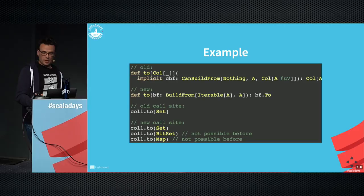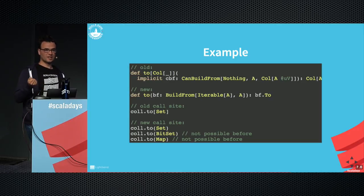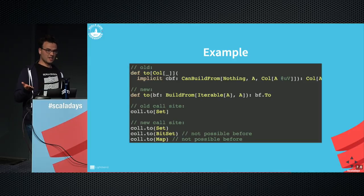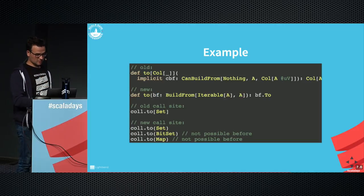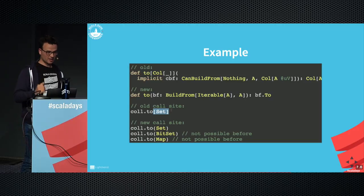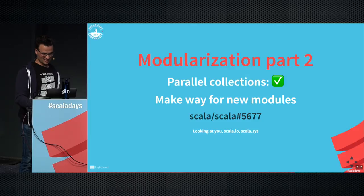Here's an example of the much-maligned CanBuildFrom — actually part of my thesis, so I won't take it personally. What you get now is a lot cleaner. Because you can now overload these methods, you can still give a map on String that maps chars to chars and get a String back. But instead of ad-hoc polymorphism implemented with the type class pattern, you get it directly from overloading. The companion object replaces the type constructor parameter — note the sharper brackets are gone and you now get nice round parentheses.